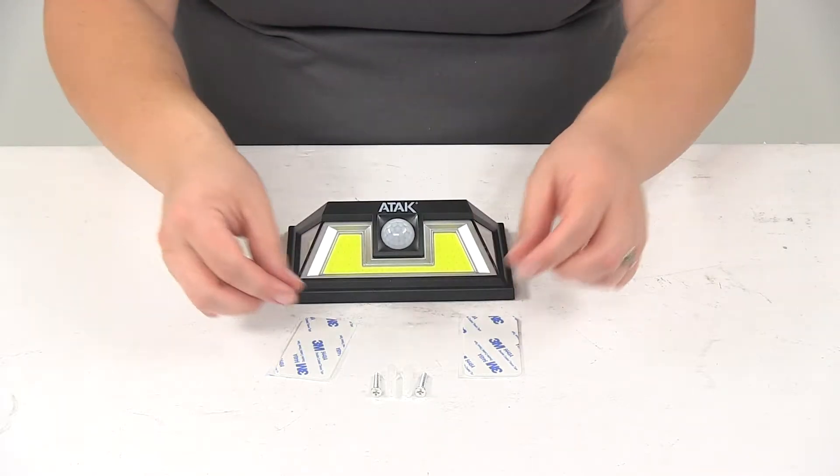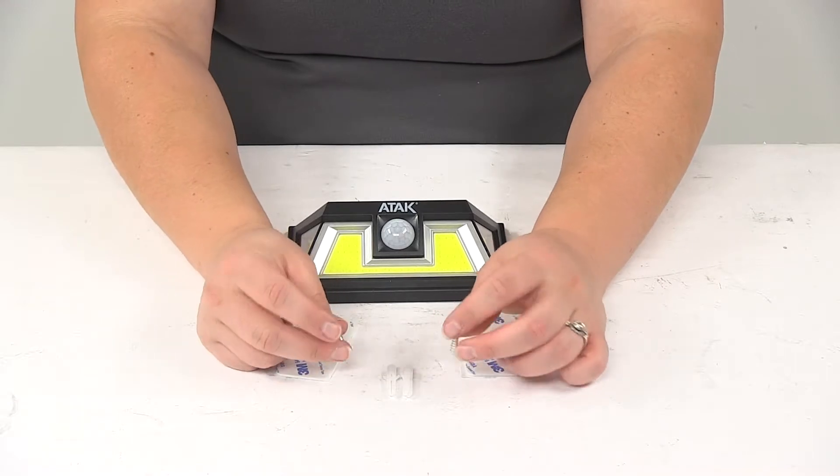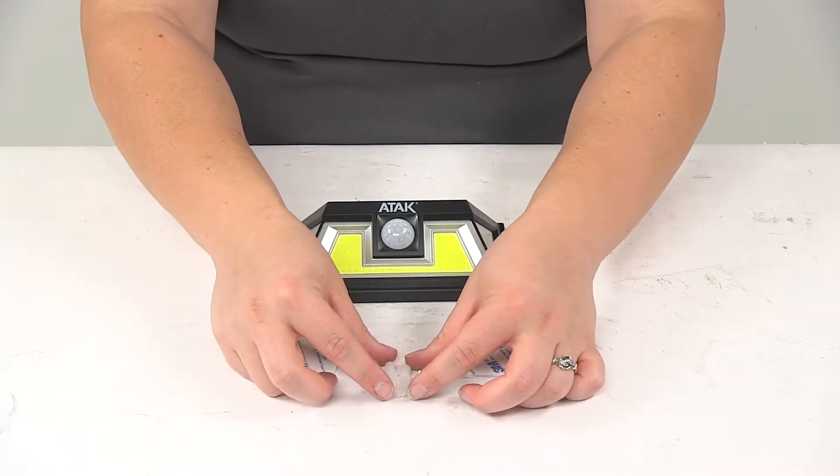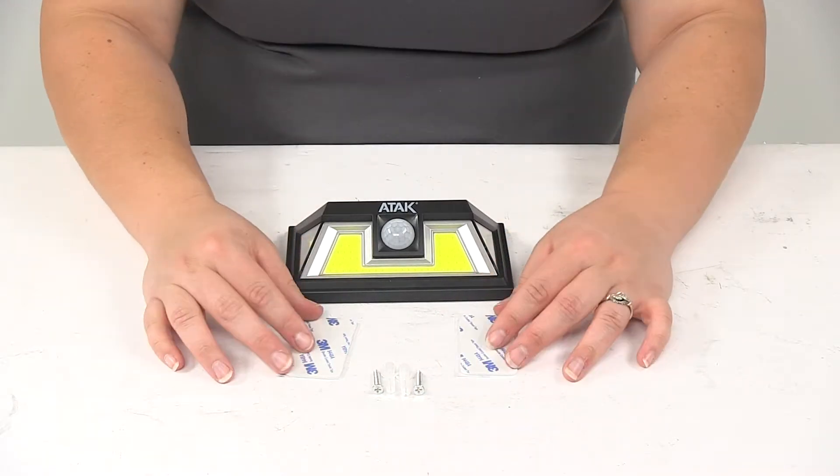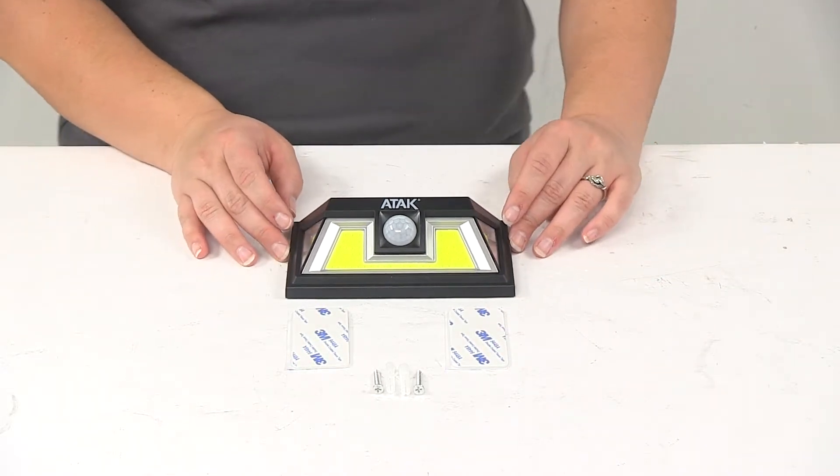You can also use the two screws to get this mounted up. It also comes with two anchors for those screws if you need them. You can use both the double sided tape and the screws, or one or the other, whichever works best for you.